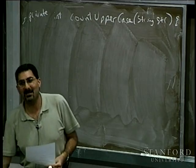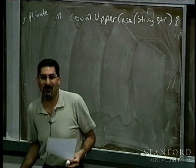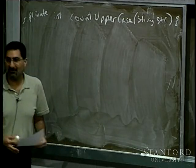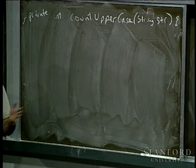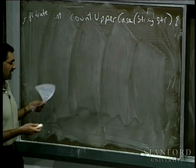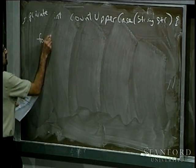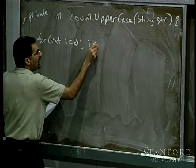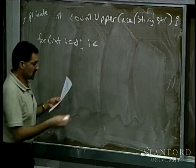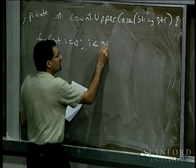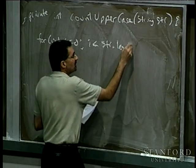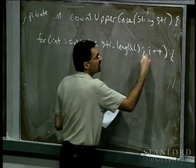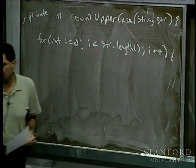We want to have a for loop that goes through all the characters of the string. We can do that by saying: for int i equals zero, i less than the length of the string — str.length is the method we use to get the length of the string — then i++. This is going to loop through all the characters of the string.